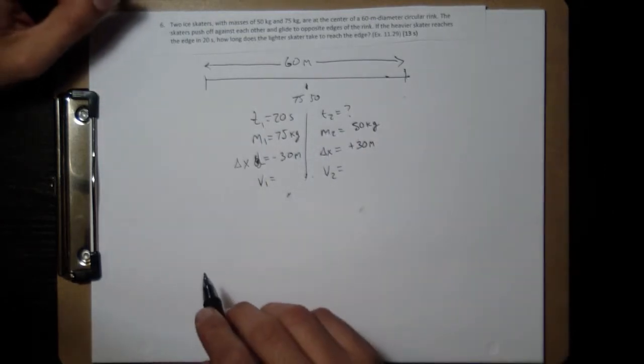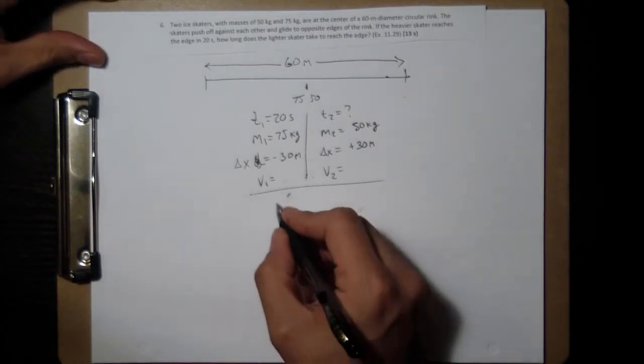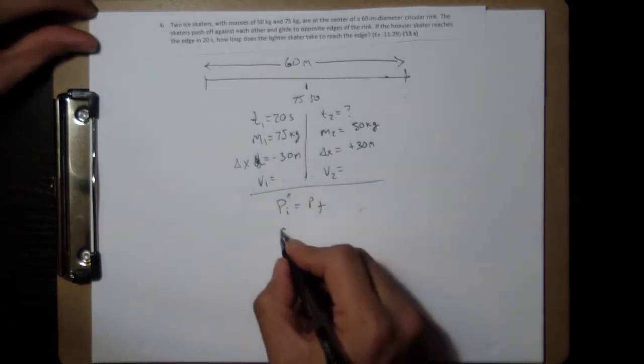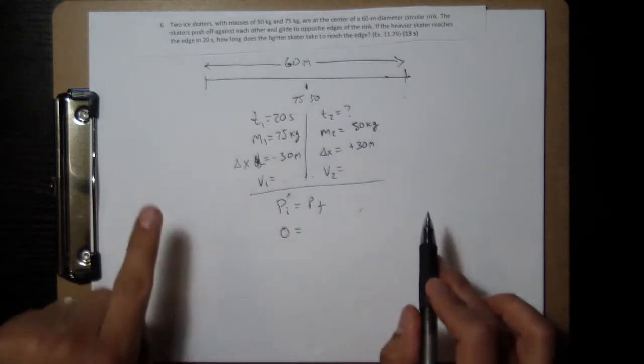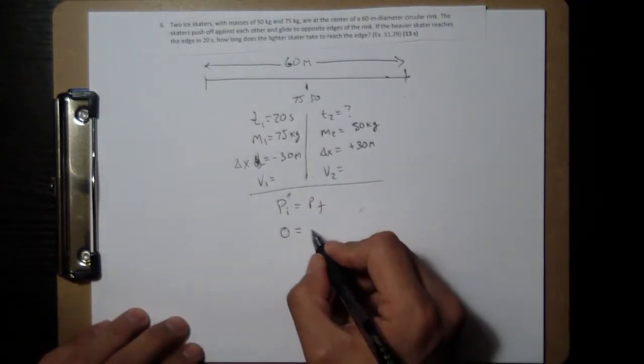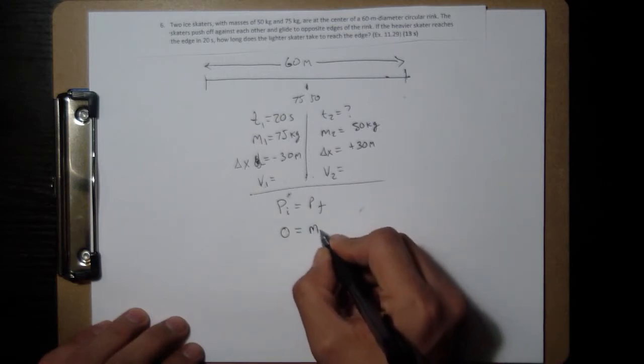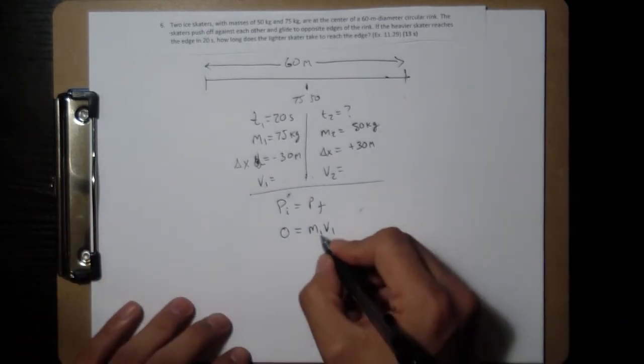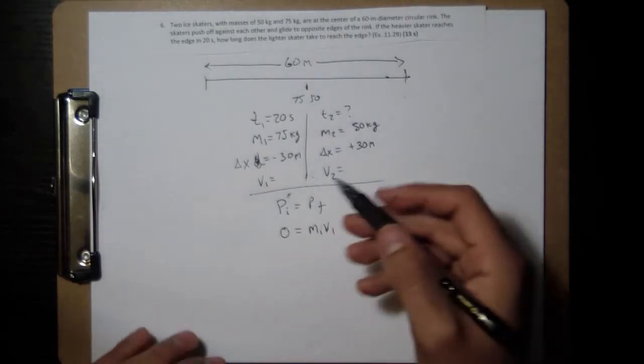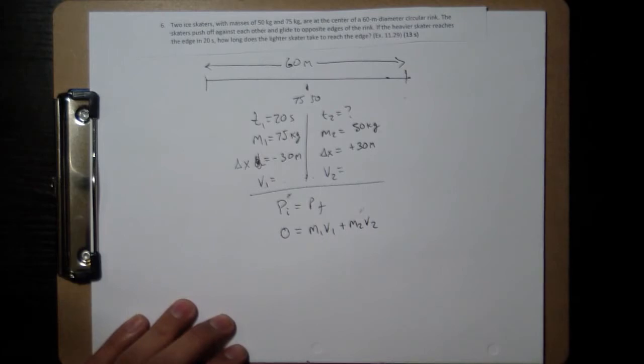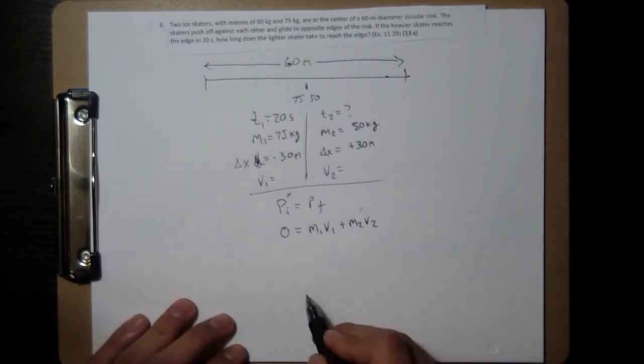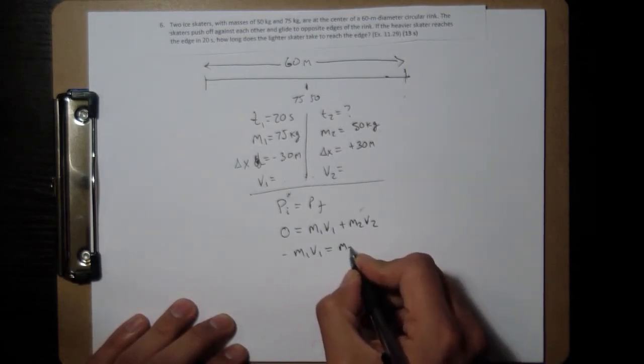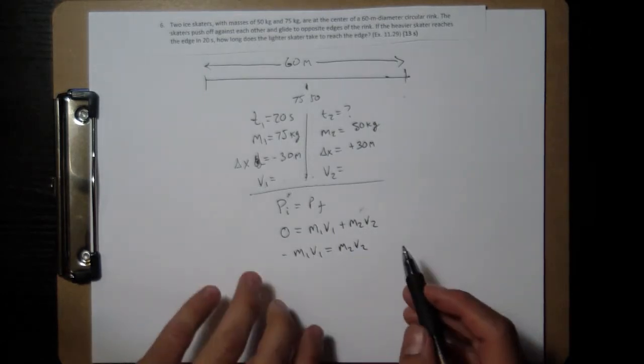So how does the momentum work? Well, we have that initial momentum is final momentum. Our initial momentum, they're just sitting there or standing there, so that's zero. Our final momentum is going to be both of them moving, so it's m1 v1. I'm going to keep both of them positive to the right, so if the sign comes out as negative that means it's going to the left, and m2 v2. So if I move one of these to the left we'll get negative m1 v1 equals m2 v2.